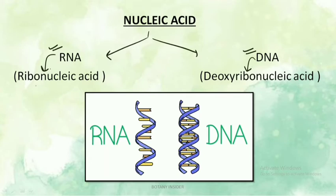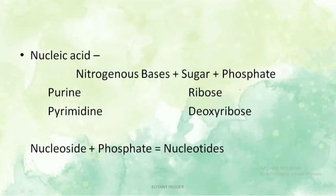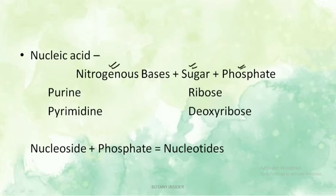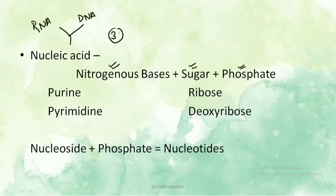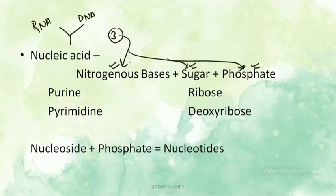Why are they called ribo- and deoxyribonucleic acid? These nucleic acids are composed of three main components: first, the nitrogenous bases; second, the sugars; and third, the phosphates. Both DNA and RNA are made up of these same three components.